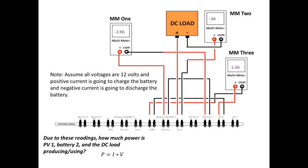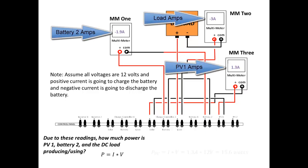By using this information, we can calculate the power of the three components as follows. The power of PV1 is 1.3 amps times 12 volts, which gives 15.6 watts. The same can be done for the load and the battery, which gives 36 watts for the load and 22.8 watts for the battery.